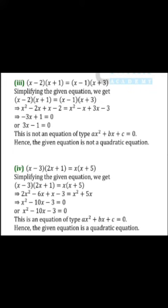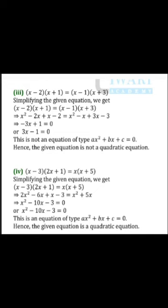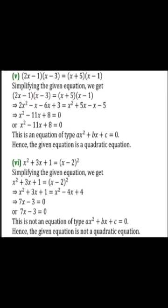Simplifying the given equation we get (2x - 1)(x - 3) = (x + 5)(x - 1), which gives 2x² - 6x - x + 3 = x² + 5x - x - 5, or 2x² - 11x + 8 = 0. This is an equation of type ax² + bx + c = 0. Hence the given equation is a quadratic equation. Here a = 1, b = -11 and c = 8.